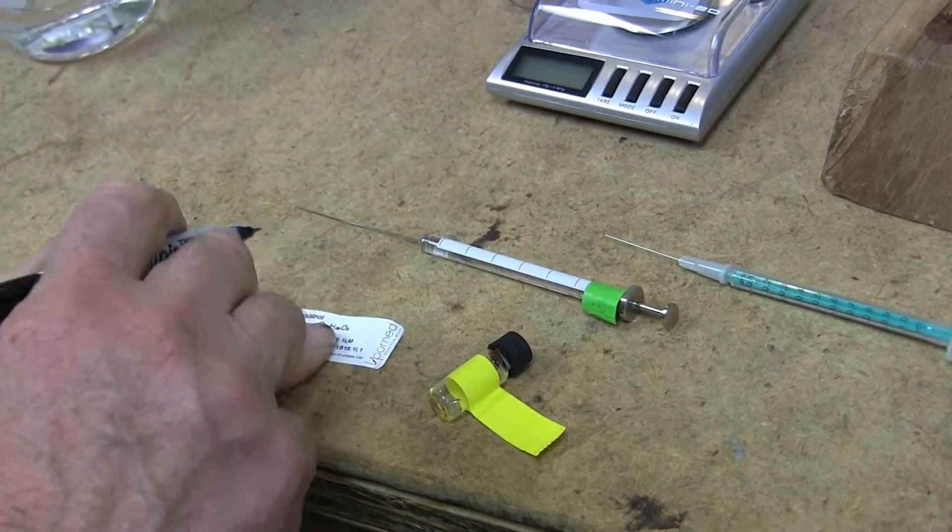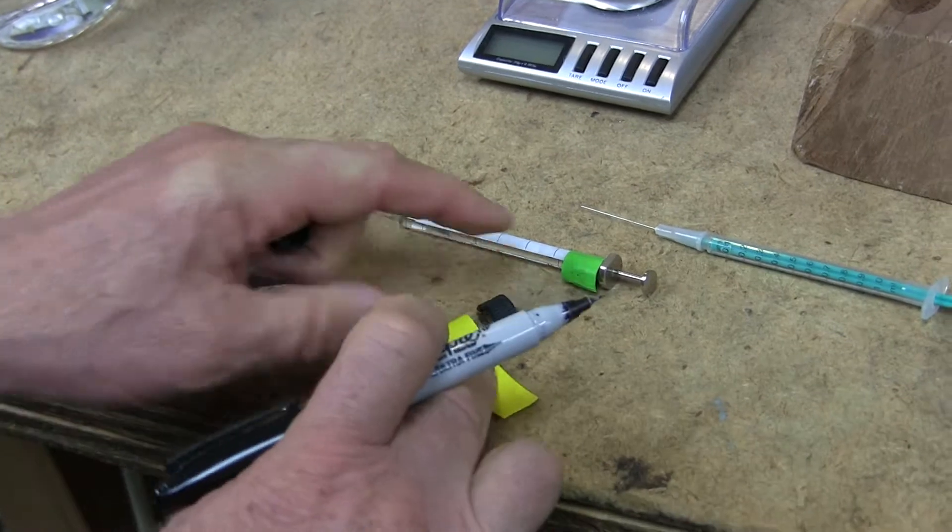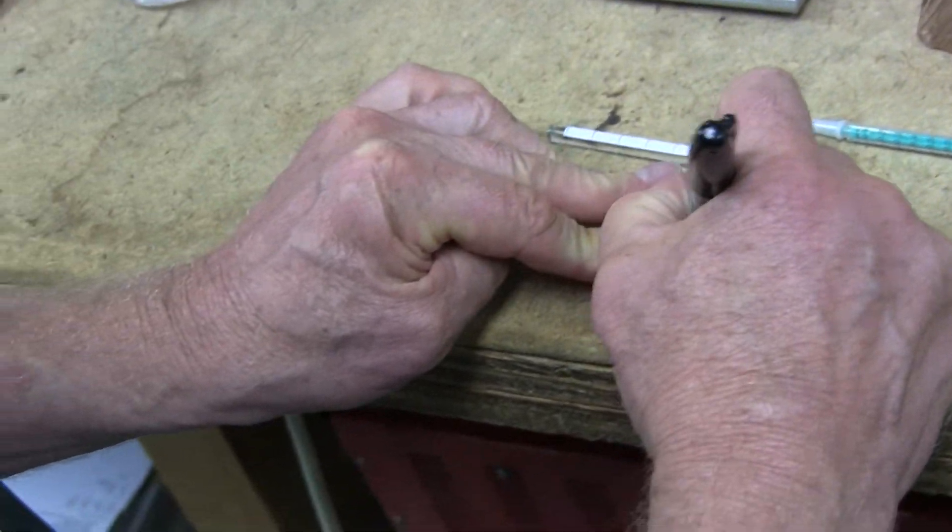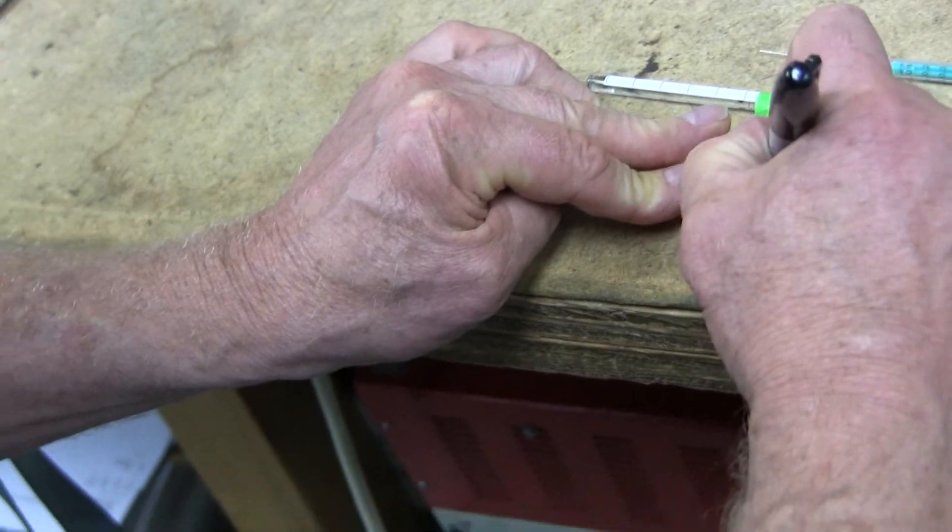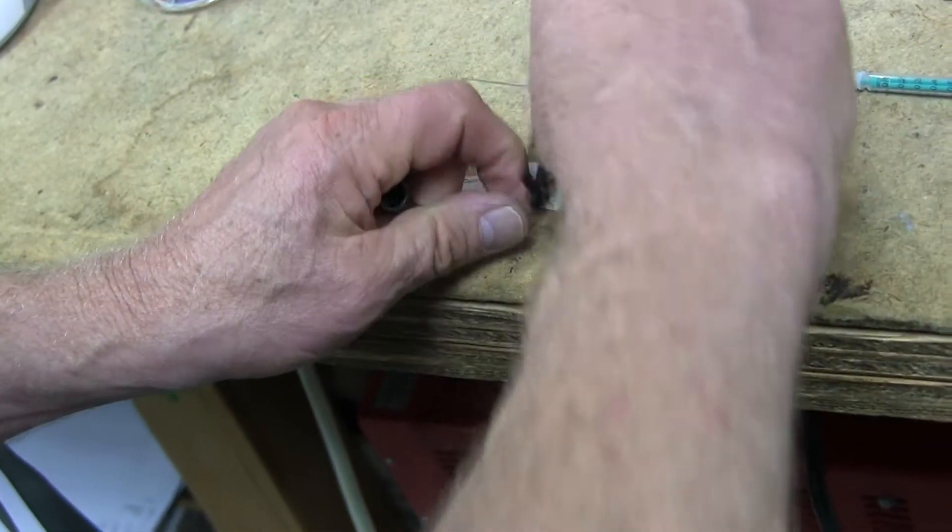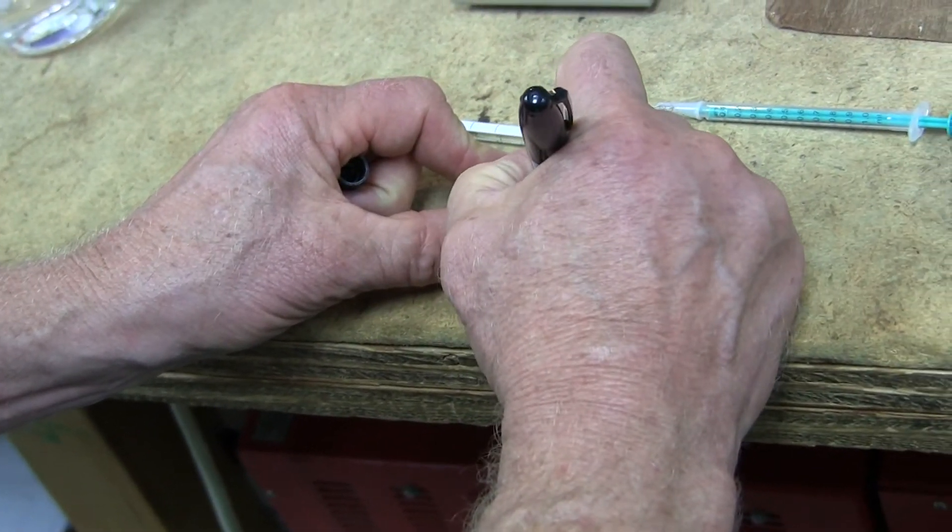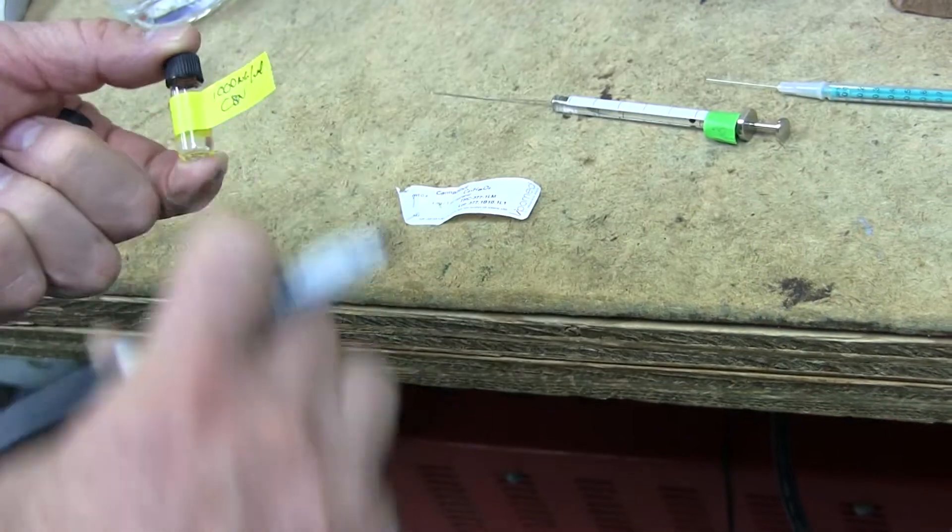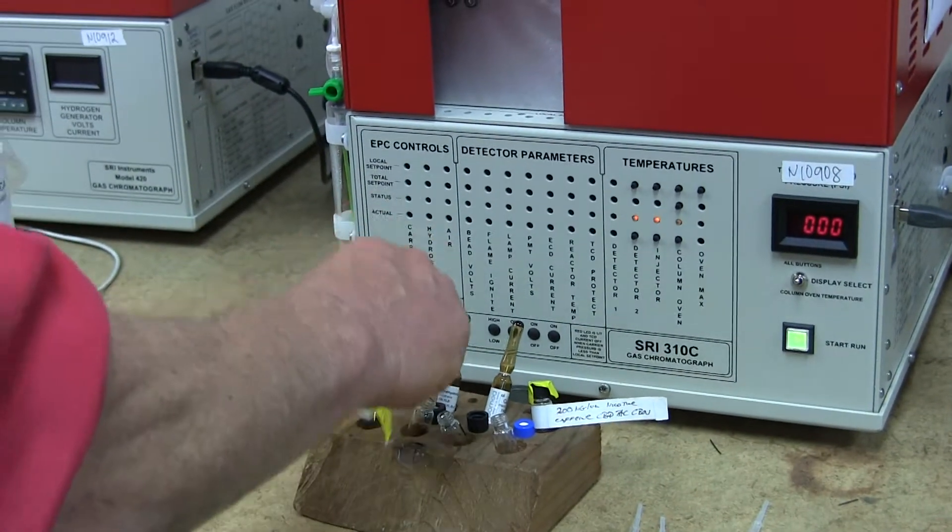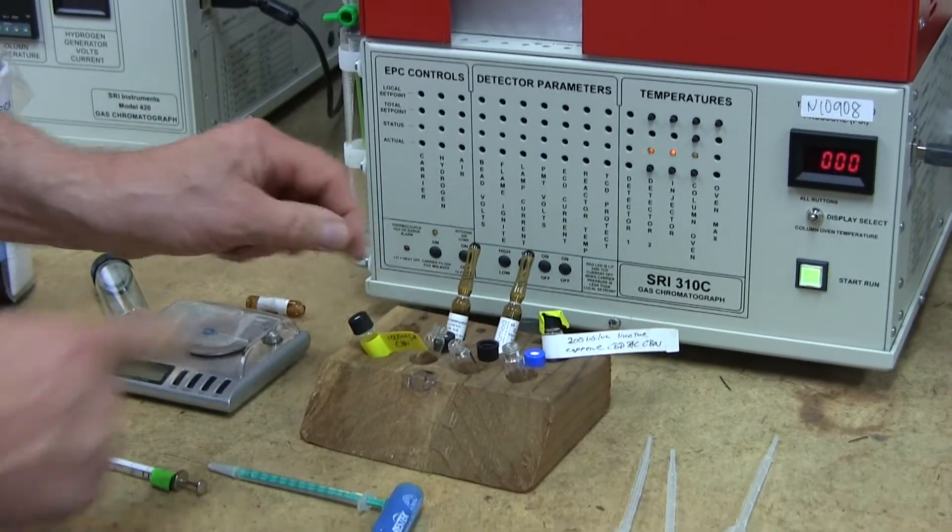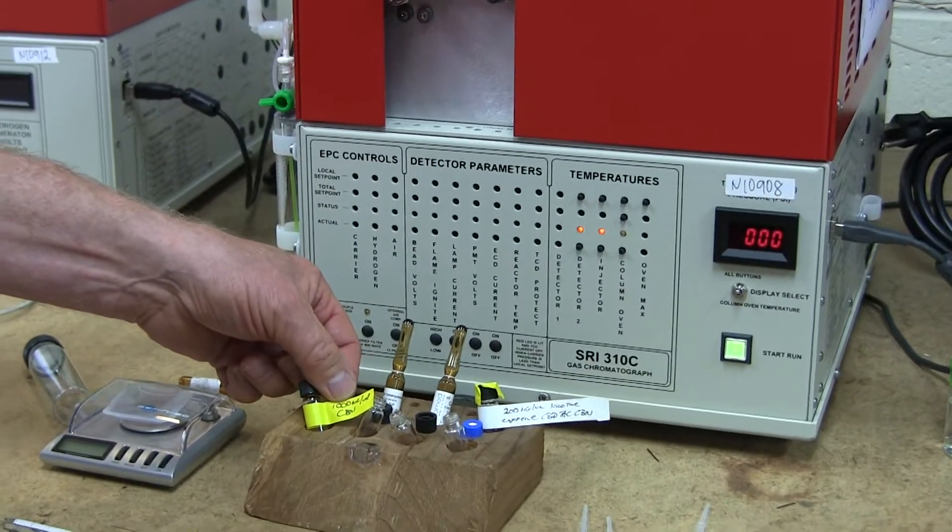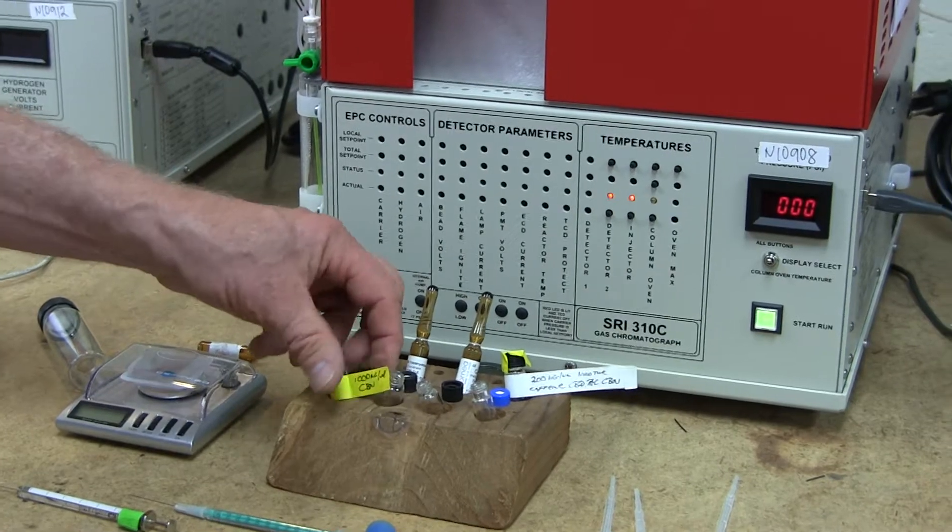But I kind of like to just write the identifying number right on there. So this particular stuff is cannabinol, which is CBN. So I'm going to put this as 1,000 nanograms per microliter CBN. And on the back, I'm going to put the date, which is 6-6-17. Okay. So there's our CBN standard and its concentration in this bottle is a tenth of a percent, which is the same as 1,000 nanograms per microliter.